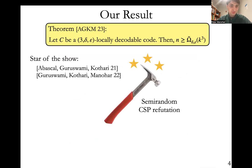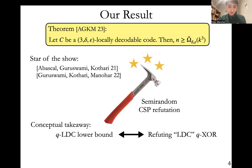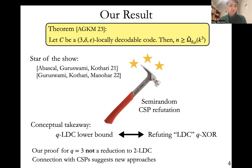Our main result is that any three (delta, epsilon)-locally decodable code must have block length n that's omega(k^3), where we suppress some polylog k factors and some polynomial dependence on delta and epsilon. The interesting thing is how our proof works. In our proof, we leverage some pretty fancy tools developed in prior works of Abascal-Guruswami-Kothari and Guruswami-Kothari and myself, which designed algorithms for semi-random CSP refutation. So we use these algorithms to prove our lower bound. The conceptual takeaway here is that q-LDC lower bounds are somewhat equivalent to refuting a specific type of q-XOR instance.